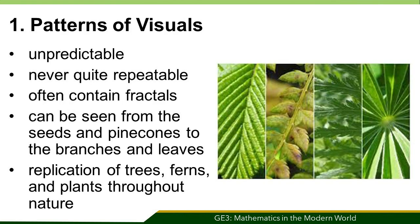The first is patterns of visuals. Visual patterns are often unpredictable, never quite repeatable, and often contain fractals. These patterns can be seen from seeds and pine cones to the branches and leaves. They are also visible in self-similar replication of trees, ferns, and plants throughout nature.